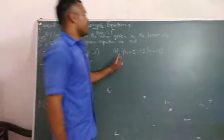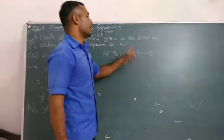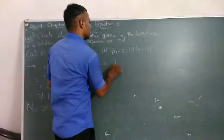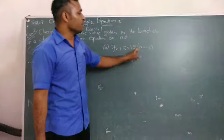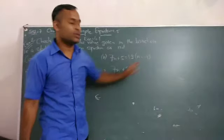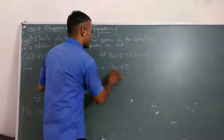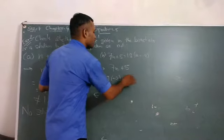Next thing, 7n plus 5 equals 19. Here we put n equals minus 2. 7n and n equals minus 2 plus 5.